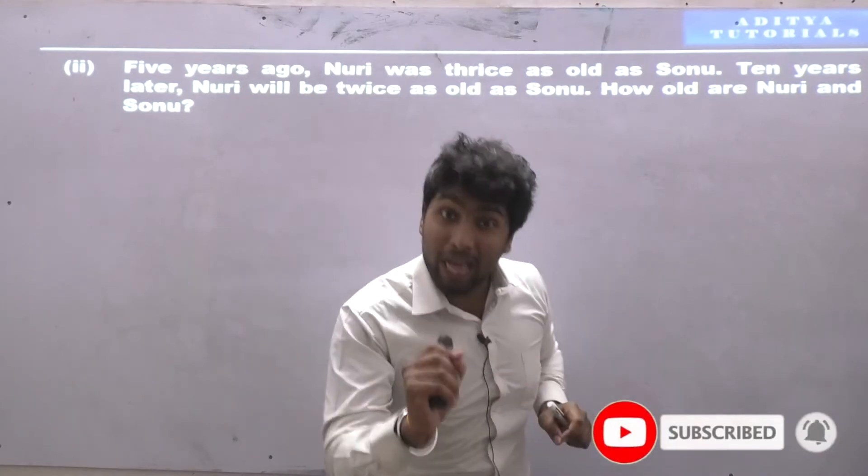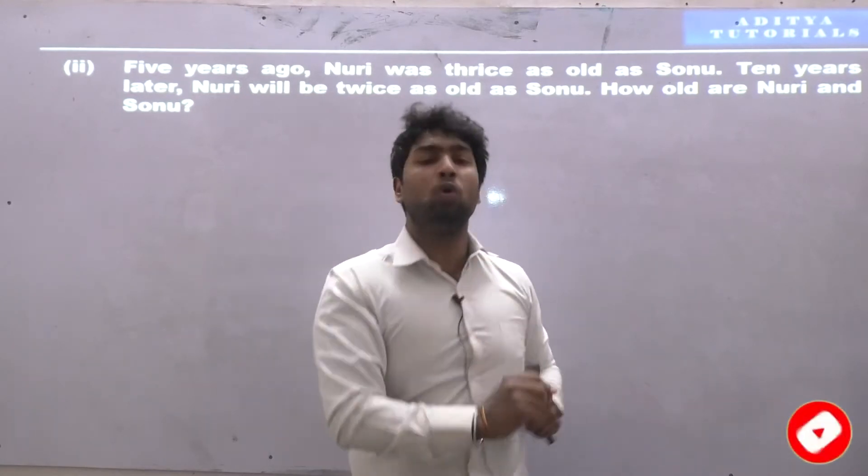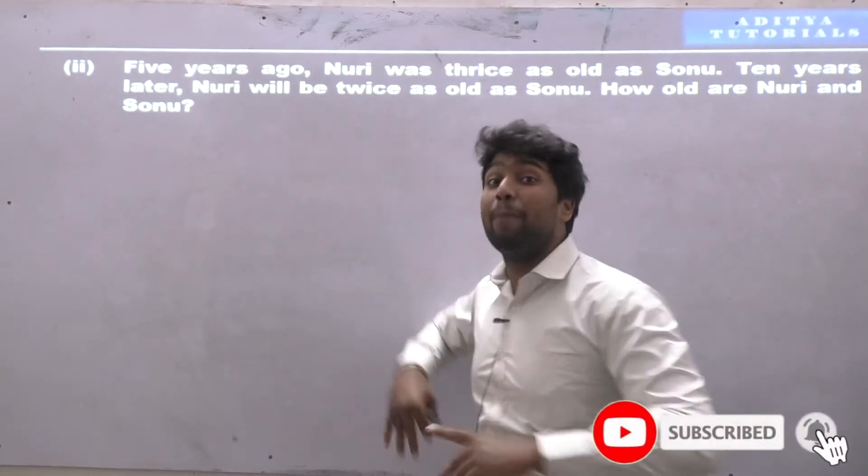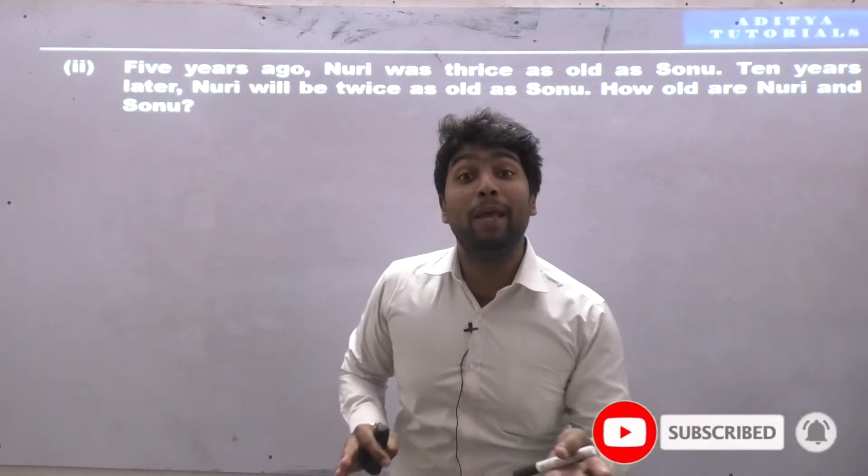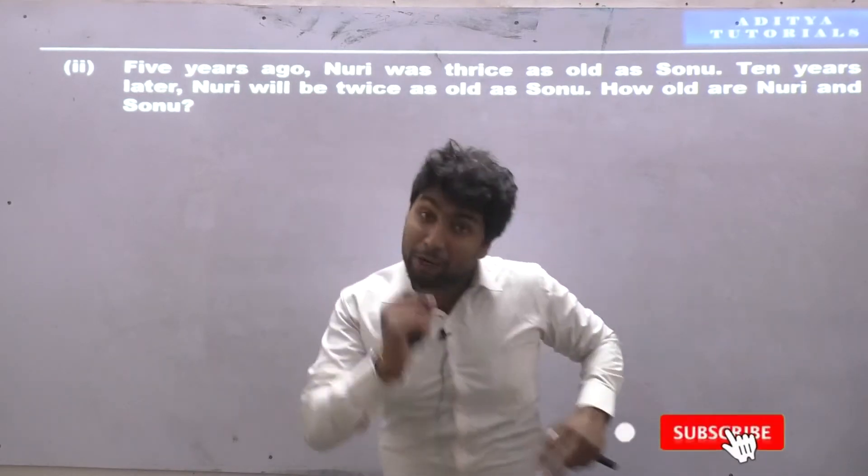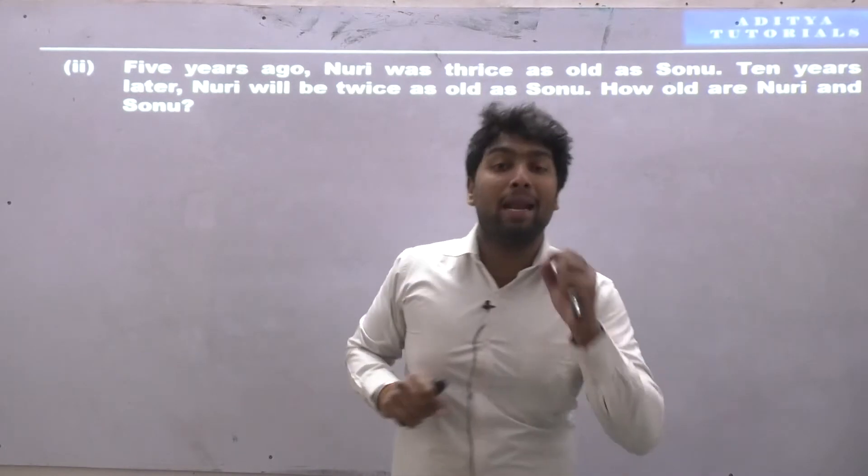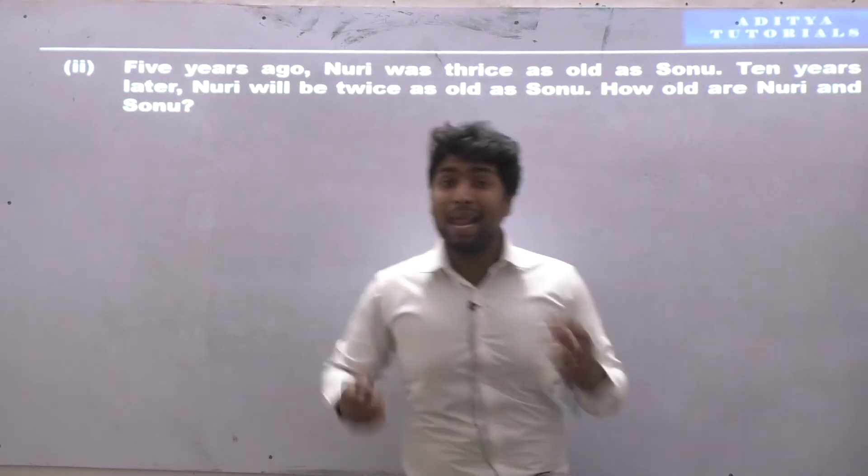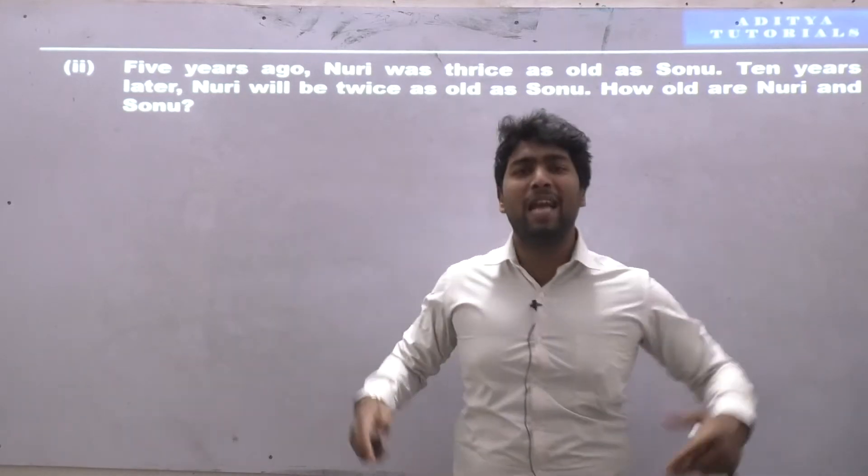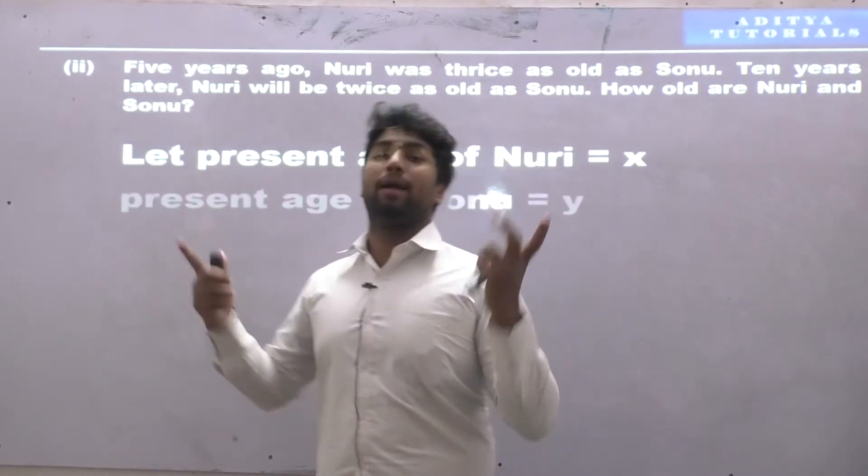And 10 years later, Nuri will be twice as old as Sonu. So we need to find the age of Nuri and the age of Sonu. Let the present age of Nuri be x years and the present age of Sonu be y years.